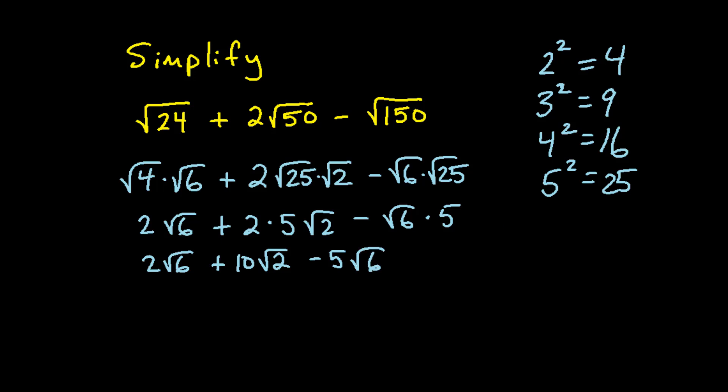Next, we look for our like terms. Two of these terms have a square root of 6, and we can combine them by adding and subtracting the numbers in front of those, which is 2 minus 5, that gives us negative 3 plus 10 square root of 2. This could also be written as 10 square root of 2 minus 3 square root of 6. And that's as far as we can go with this problem.